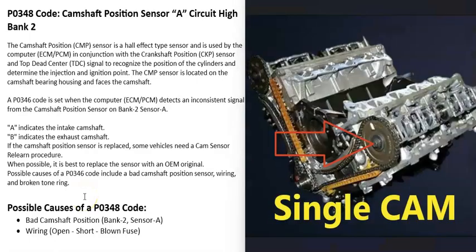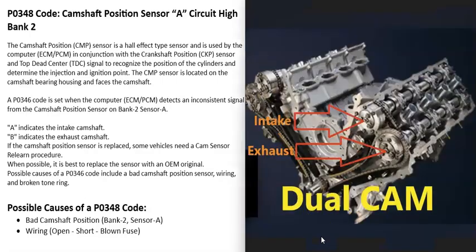An engine can have one cam on each bank or two cams on each bank. If you have a dual overhead cam engine, the A camshaft is the intake camshaft and B is the exhaust camshaft. So with this P0348 code, find the bank two side of the engine — the camshaft position sensor on the intake side is the A camshaft position sensor.